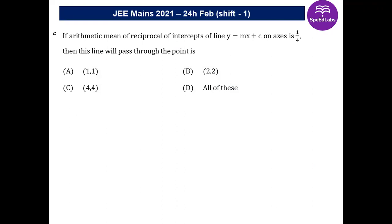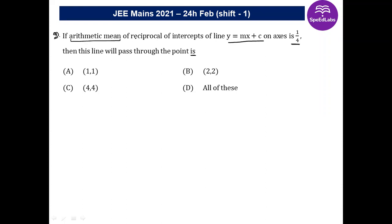The first question from the 24th February examination shift one is: if the arithmetic mean of reciprocals of intercepts of the line y = mx + c on the axes is 1/4, then this line will pass through which point? So what is given to us is the arithmetic mean of reciprocals of the intercepts, where the line is y = mx + c.